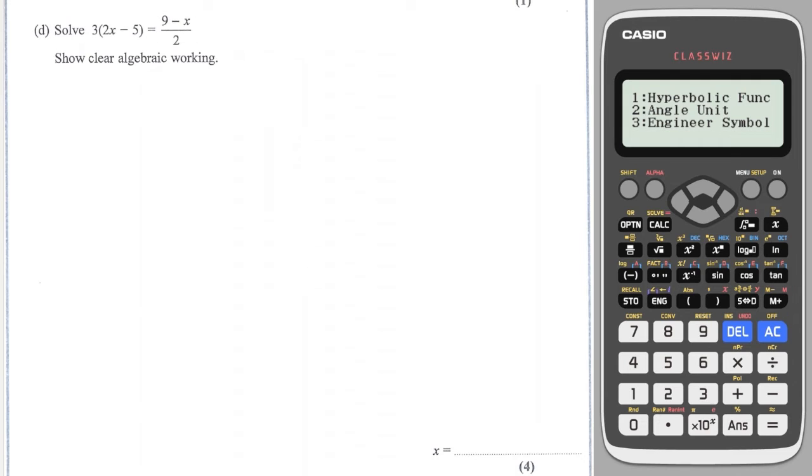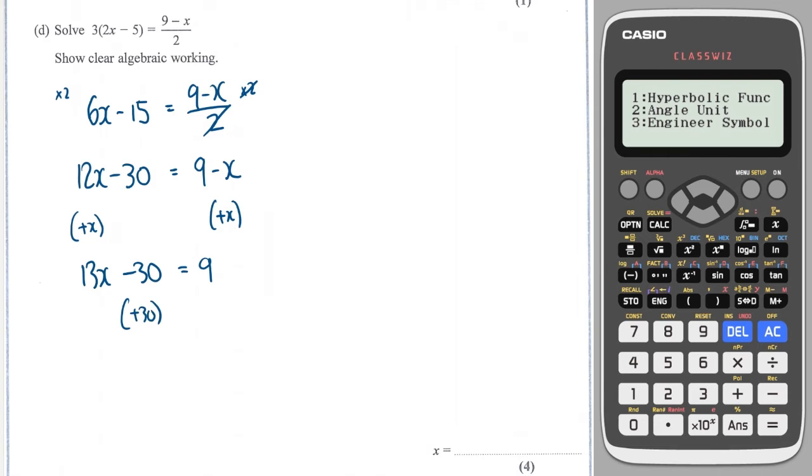Next level up, we've got a fraction and a bracket. So I'm going to expand the bracket first, and that's going to give me 6x minus 15 is equal to 9 minus x over 2. I'm then going to multiply both sides by 2. This is going to give me 12x minus 30. And this times by 2 is going to cancel with this divide by 2, so I'm going to be left with 9 minus x. The smallest x there is negative 1x, so I'm going to add x to both sides. And that's going to give me 13x minus 30 is equal to 9. I'm then going to add 30 to both sides. And that's going to give me 13x is equal to 39. Divide through by 13. X is equal to 3.